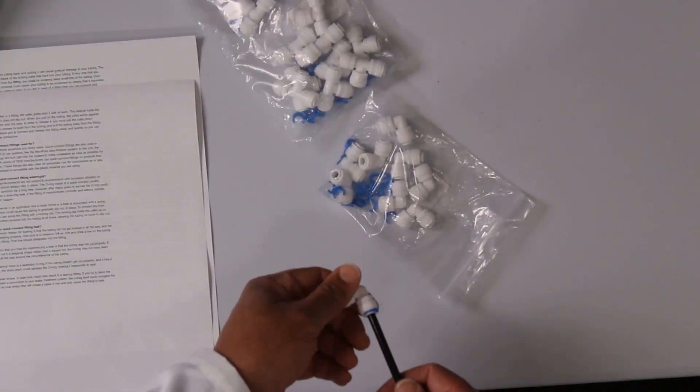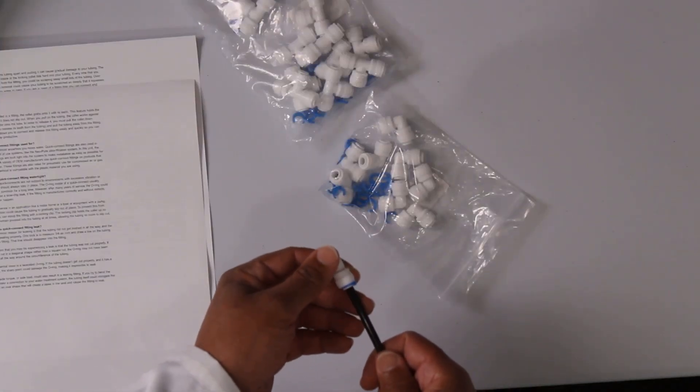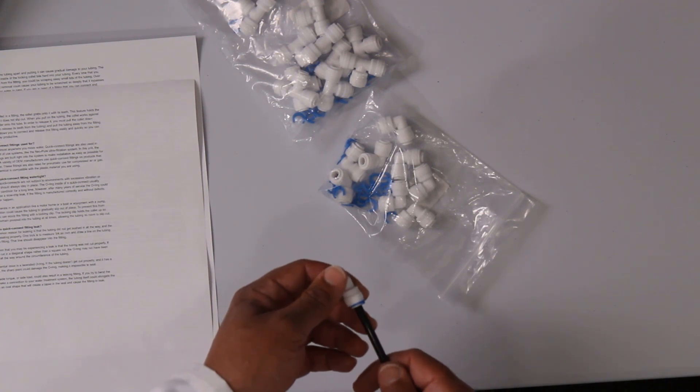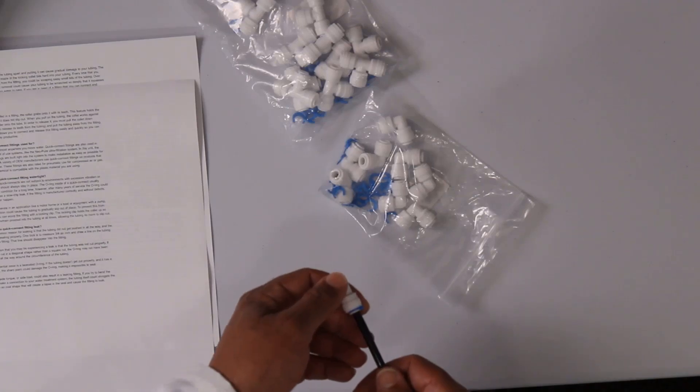So number one, as was mentioned before, make sure you insert the tubing all the way. When you insert the tubing into the fitting, you would insert it and you would feel some resistance. You would feel like it doesn't want to go anymore. Give it one last good effort and you should feel the o-ring sliding past your tubing. You should feel that last resistance and push it all the way in until it stops and that's when you know that you have a good connection.